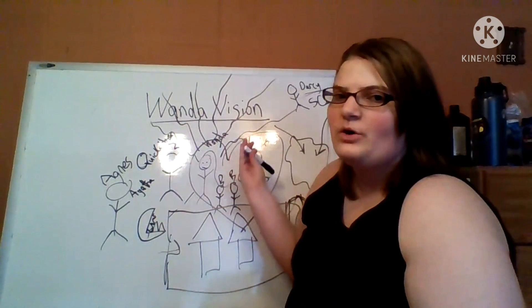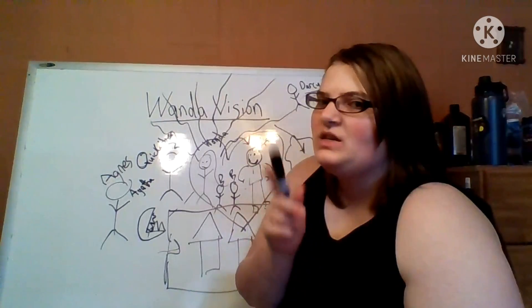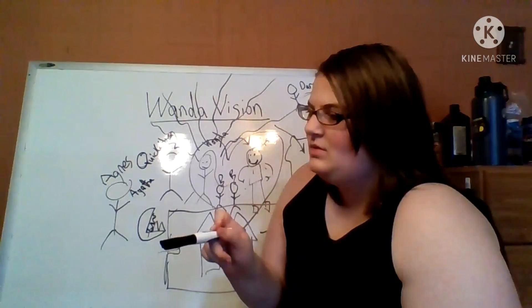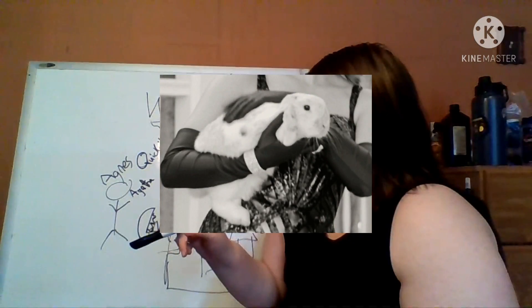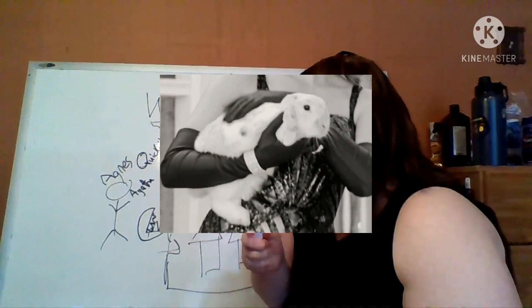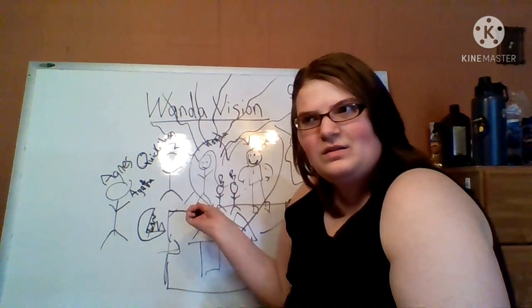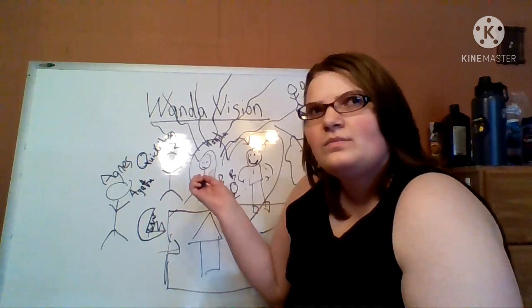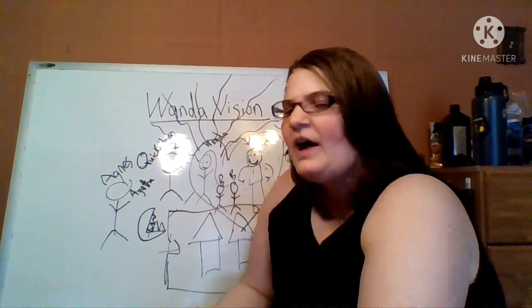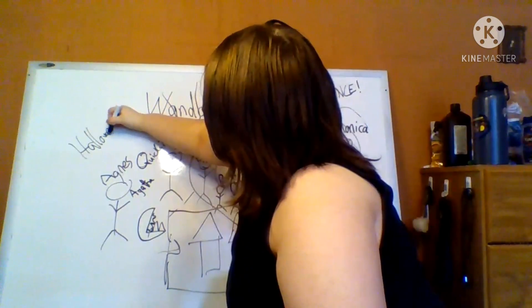But I know one is Modern Family. And somehow the two kids fit in it. But Vision's a robot, so how do the kids happen? They must be another projection of Wanda's mind. And there's a rabbit somewhere in here. Where does the rabbit fit in? Is the rabbit the boy's pet? Maybe the boys have a rabbit as a pet. Oh, and it happens around Halloween. It's a Halloween special.